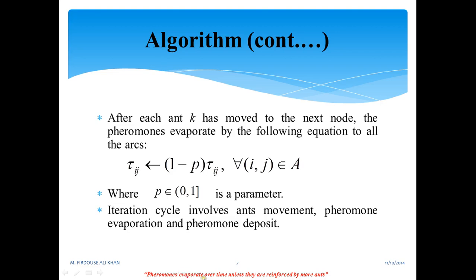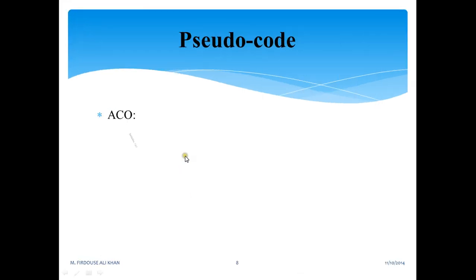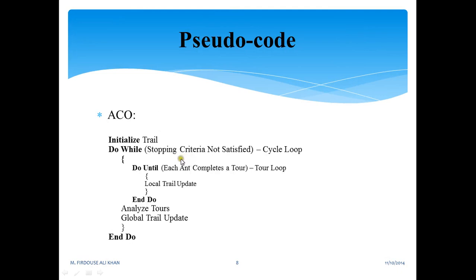Pheromone evaporates over time unless they are reinforced by more and more ants. The pseudocode: initialize trail, do while stopping criteria not satisfied, and do until each ant completes a tour. Local trail updates, pheromone trail updates is what we are expecting here. Analyze tools, global trail updates, and it's just a pseudocode which represents the behavior.